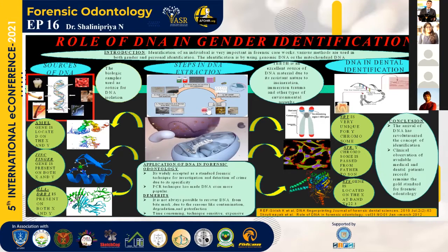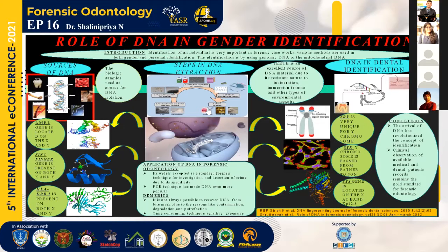There are many genes used in gender identification. The first is the amelogenin gene. Amelogenin is one of the major proteins secreted by ameloblasts of enamel. In the amelogenin gene, if the gender is female, it indicates two identical amelogenin genes. In the case of male, it has two different amelogenin genes.